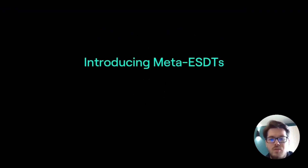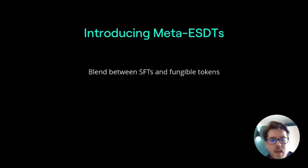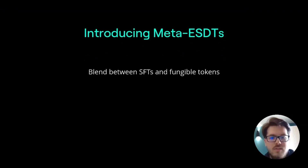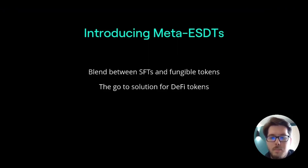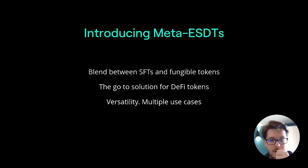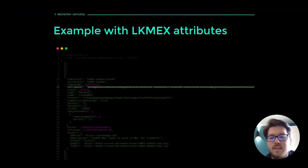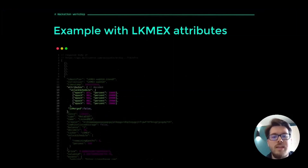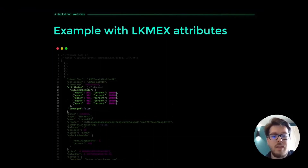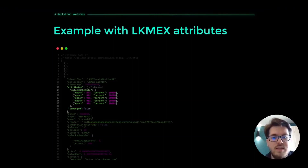I'm very excited to present the next evolution of DeFi tokens. Meta ESDTs take all the features from SFTs, adding the decimal representation of fungible tokens — making them a great solution for DeFi projects, as Meta ESDTs are very versatile and can be used in multiple scenarios. Here we can see the attributes of a locked Max Meta ESDT; if we decode the attributes, we can see the information it stores. Developed with composability in mind, the information is not stored by any smart contract but into the Meta ESDT itself, enabling different protocols to interact with each other seamlessly.